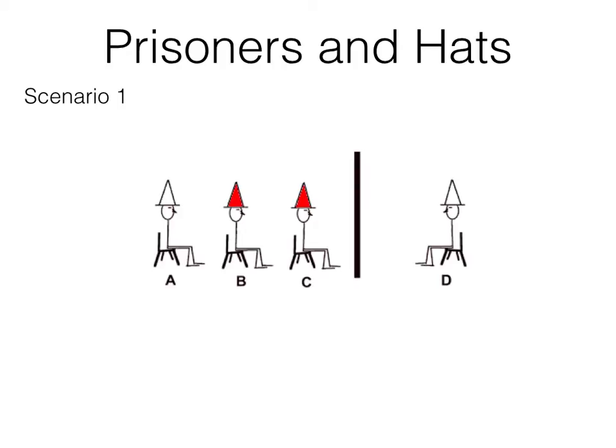Prisoner A is the only one who can see this, and under the circumstances he must take the initiative and speak up. He should realise that since both red hats are already accounted for, the colour of his hat and that of the solitary prisoner are the opposite to that of the two hats worn by B and C.